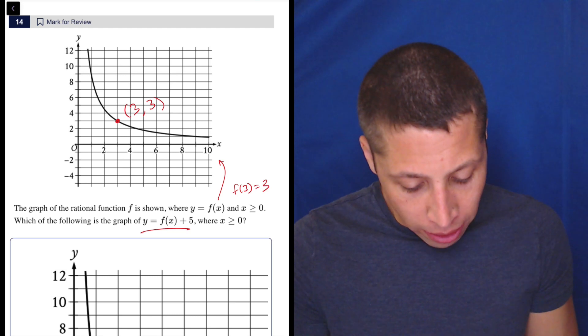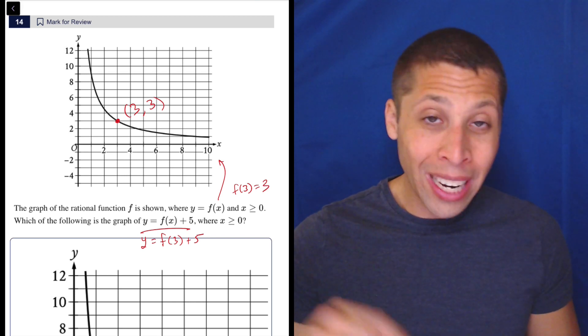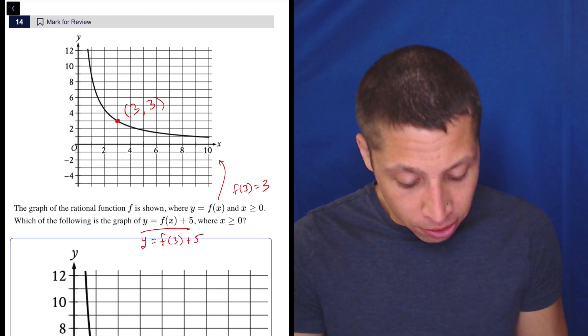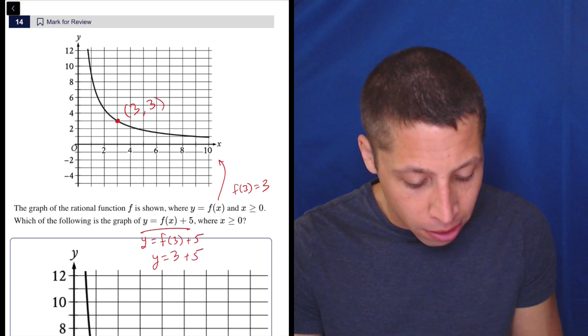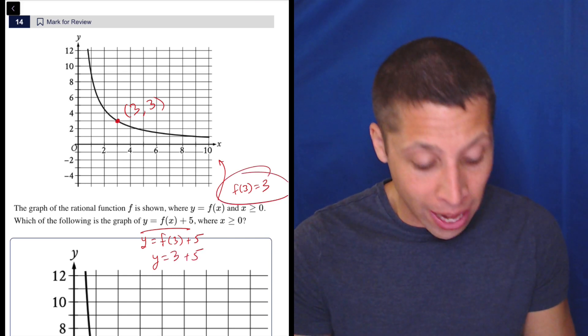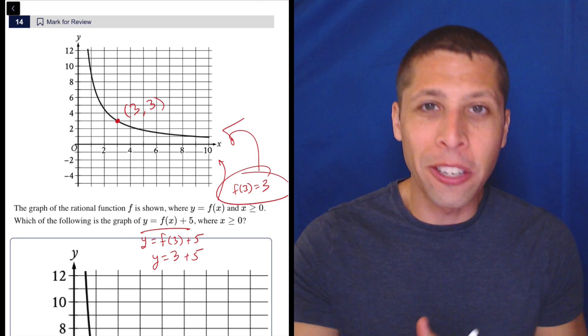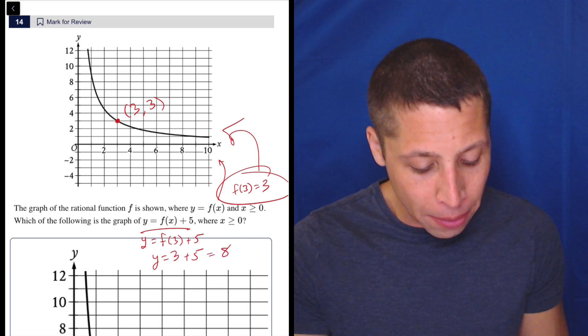Now when we have this shifted graph, y equals, well, let's focus on the same point. So when x is 3, what's going to happen? Well, f of 3 is still 3. So that's right here. That's still going off of this graph. That is true. That's how we're shifting the graph is we need to use the original one. So that means our y is 8.